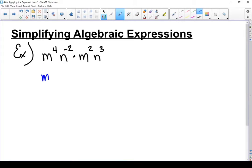Let's put our m's together. So I've got m to the power of 4 and m squared. Now look at my n's. I've got n to the negative 2 and n to the power of 3.